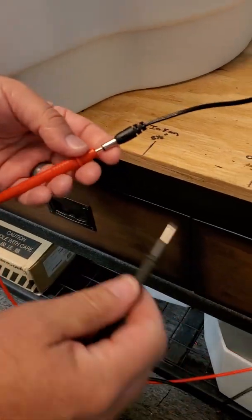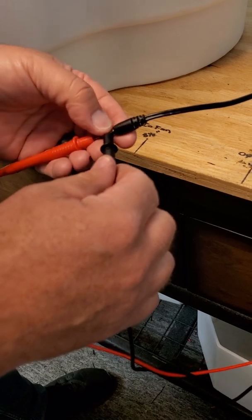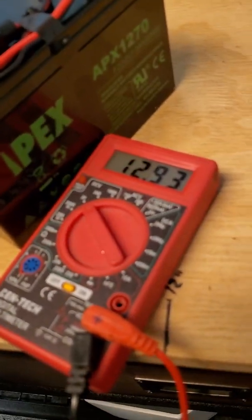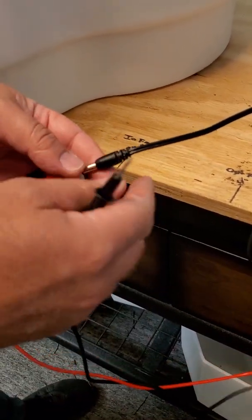Slip the positive probe inside the connector, hold the negative probe to the outside, and you see we have 12.93 volts. If you were to test this and you were not getting any voltage...